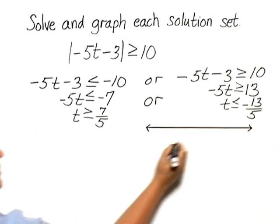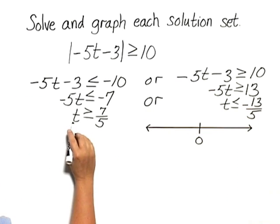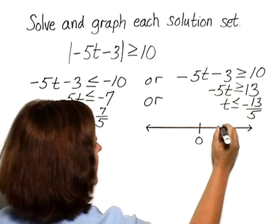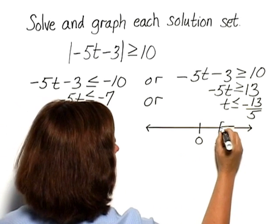So to graph these, I graph the set of all numbers that are greater than or equal to 7 fifths and shade that in.